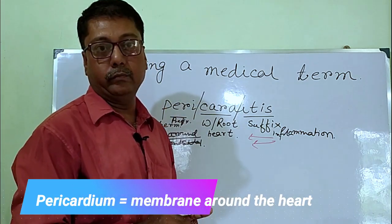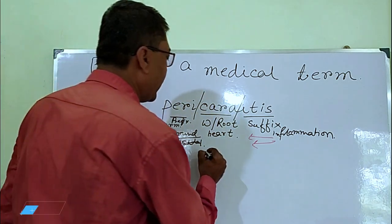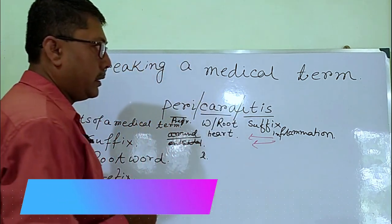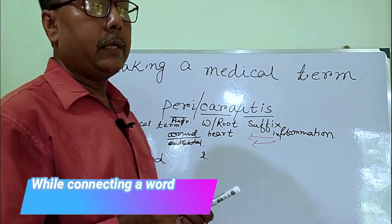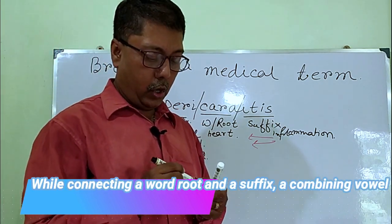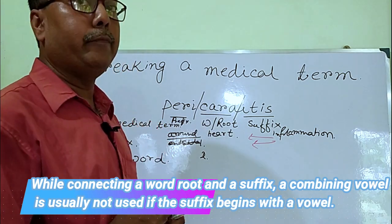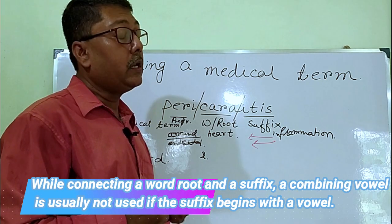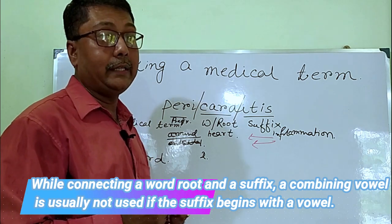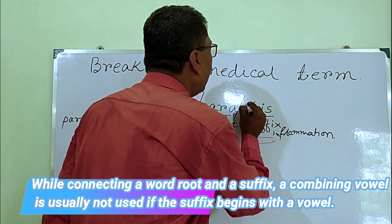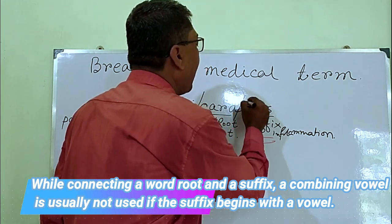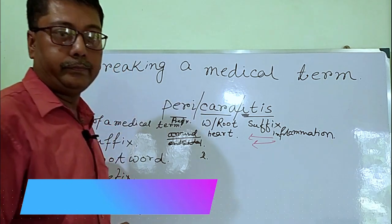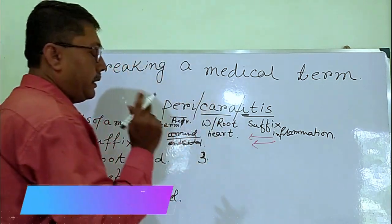Rule number two: if the first letter of the suffix is a vowel, then no combining vowel is used. For example, in pericarditis, the first letter of the suffix '-itis' is 'i', which is a vowel, so no combining vowel is needed.